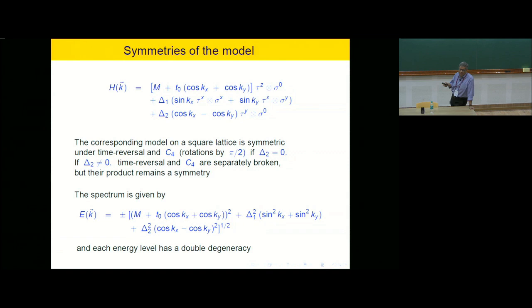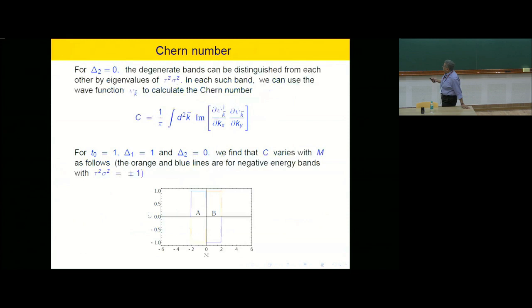The spectrum can be easily found, and it's given by plus or minus the square root of the sum of squares of these four quantities. That's because these are four anticommuting matrices — like Dirac gamma matrices — and each squares to the identity. So this is an exact energy spectrum, and each energy level has a double degeneracy. That's clear because this is really a four-component wave function and you have only two energy levels.